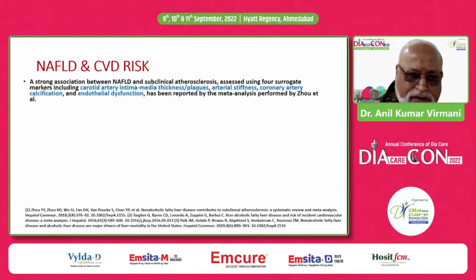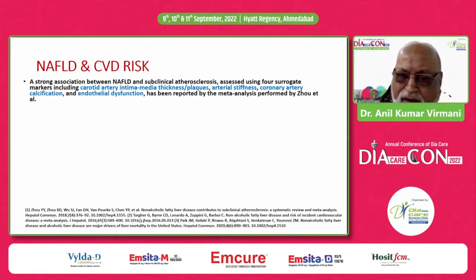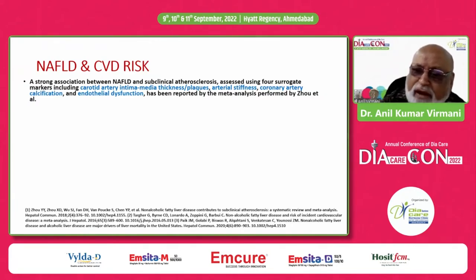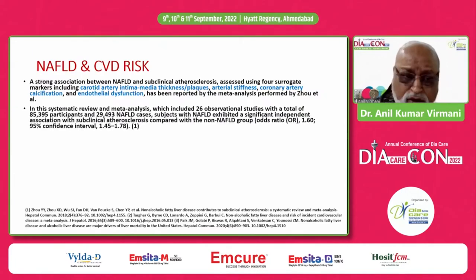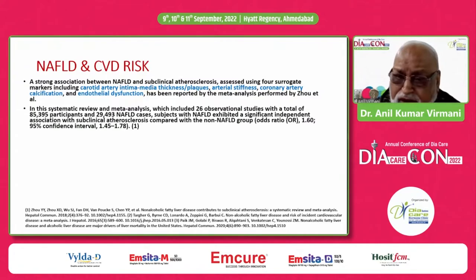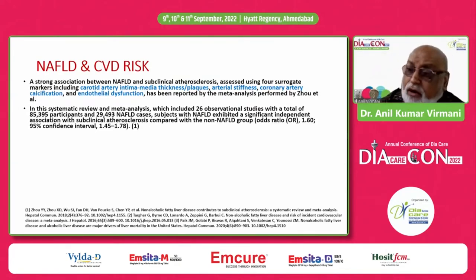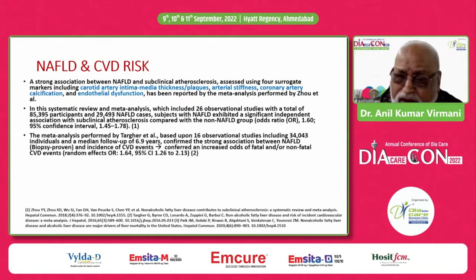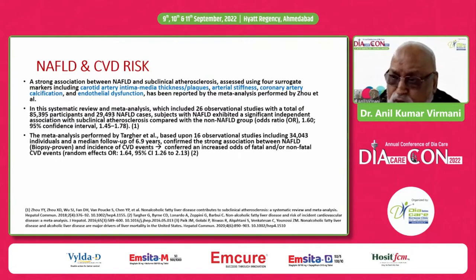Regarding the relationship between fatty liver and cardiovascular disease, there is a strong association looking at surrogate markers like carotid artery intima media thickness, plaques, arterial stiffness, coronary artery calcification, and endothelial dysfunction. A meta-analysis by Zhao showed significant subclinical atherosclerosis: a systematic review including 26 observational studies with more than 85,000 patients, of which almost 30,000 had fatty liver disease, exhibited a significant independent association with subclinical atherosclerosis — almost 60% more. Another meta-analysis by Target et al., based on 16 observational studies including almost 34,000 patients with a median follow-up of 6.9 years, confirmed the strong association between biopsy-proven fatty liver and incidence of cardiovascular events.